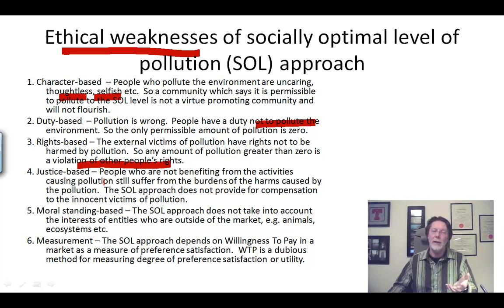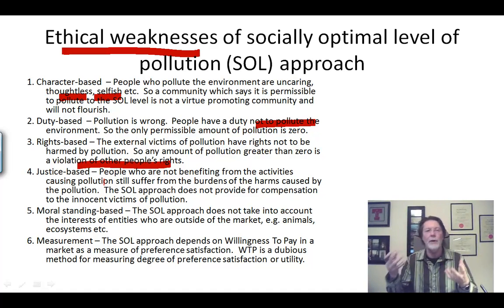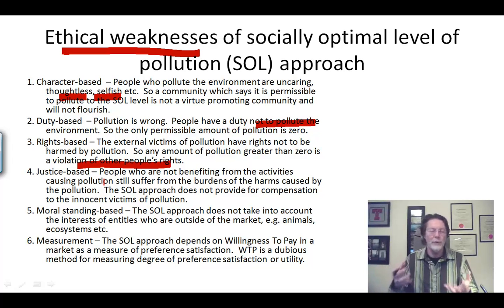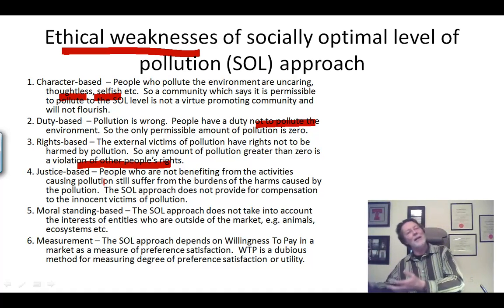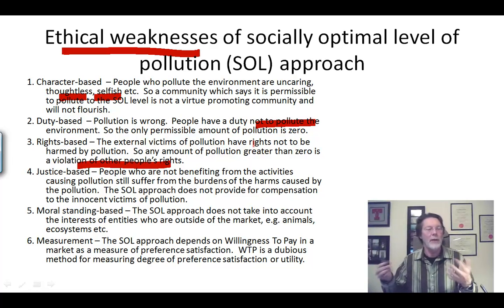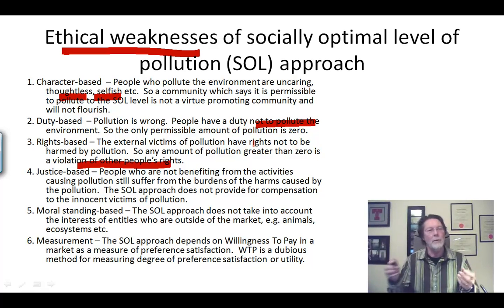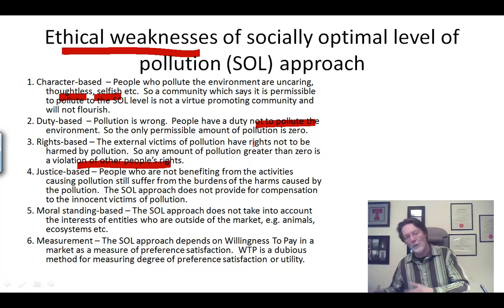A justice-based view might point out that the people who benefit from activities that cause pollution are often not those who suffer the burdens. In Canada, for example, people might burn a lot of fossil fuels and the warming climate might actually make their lives nicer. But at the same time, the increased problems caused may fall on people in the Mekong Delta, which will be flooded and those people displaced. The people who benefit from burning fossil fuels may not be the same people who pay the costs.